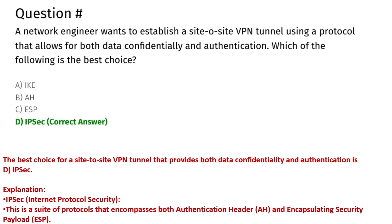The next question is: a network engineer wants to establish a site-to-site VPN tunnel using a protocol that allows for both data confidentiality and authentication. Which of the following is the best choice? Option A: IKE, Option B: AH, Option C: ESP, Option D: IPSec. The correct answer is Option D, IPSec.